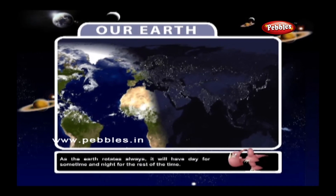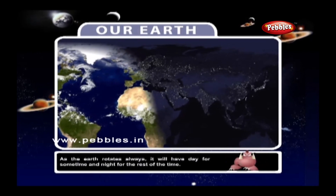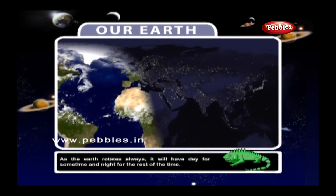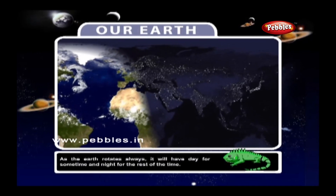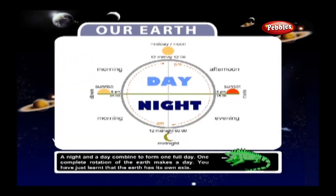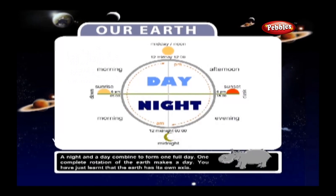As the Earth rotates, it will always have day for some time and night for the rest of the time. A night and a day combine to form one full day. One complete rotation of the Earth makes a day.